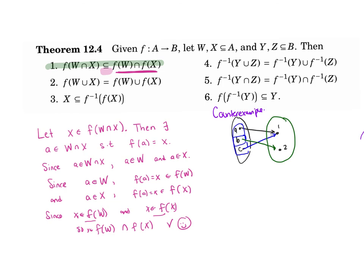So if I look at my W = {A, B}, and then my X = {A, C}, then f(W ∩ X) is f of just... that should have been a B... and then f(B), where does B get mapped to? That's just {2}.